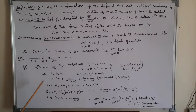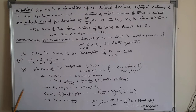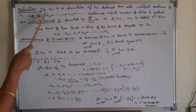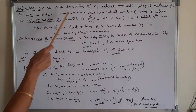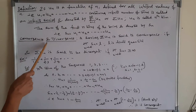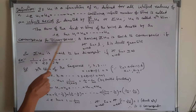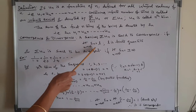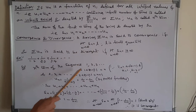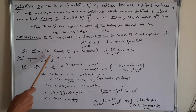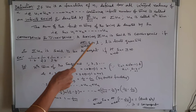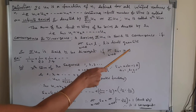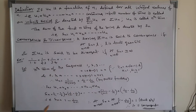The main concepts to discuss here are convergence and divergence. When we add more and more terms — infinite terms — that is the concept of convergence. A series sigma un is said to be convergent if the limit as n tends to infinity of Sn equals L, where L is a finite quantity. Sigma un is said to be divergent if the limit as n tends to infinity of Sn equals positive or negative infinity.